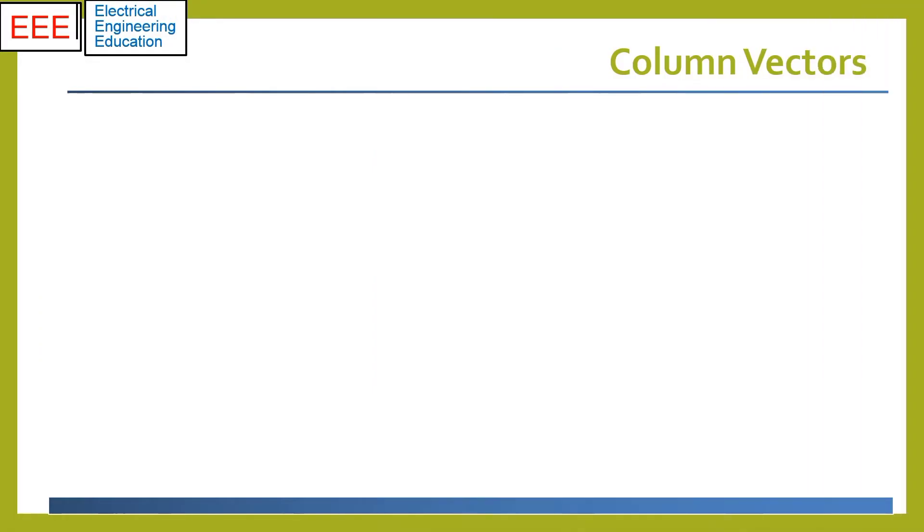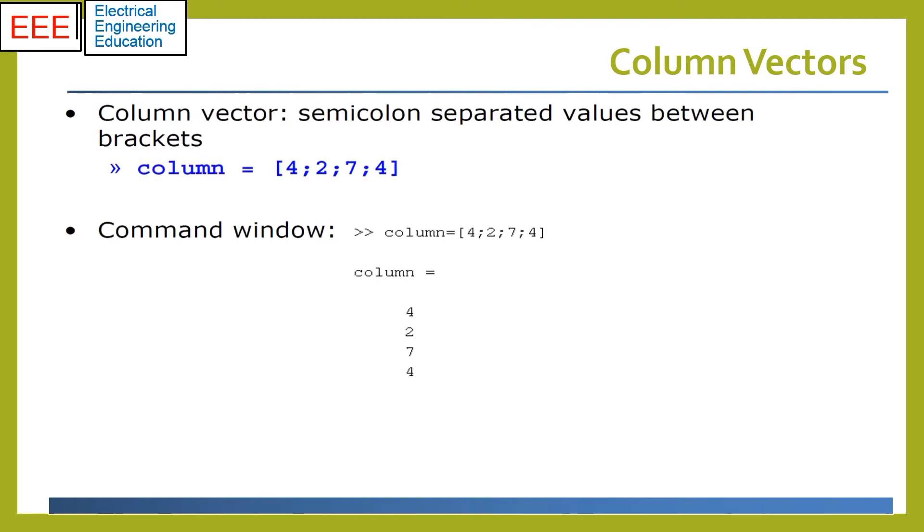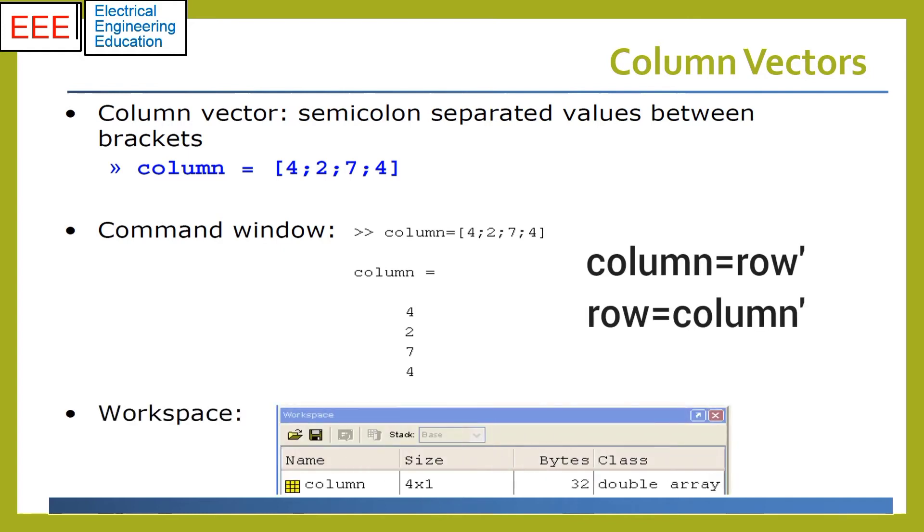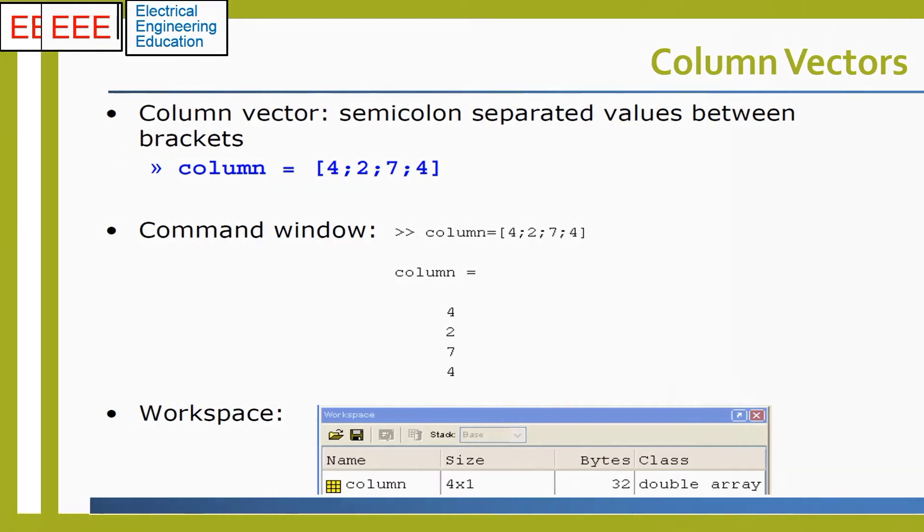Column vectors are created using square brackets with semicolons or new lines to separate elements. A row vector may be converted into a column vector, and vice versa, using the transpose operator represented by single quote. The specs can be seen in workspace window.